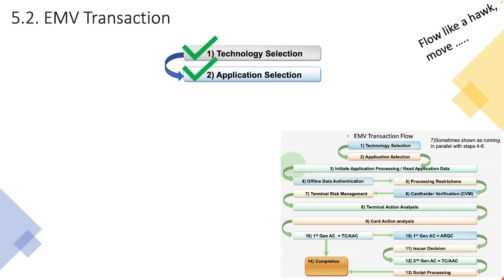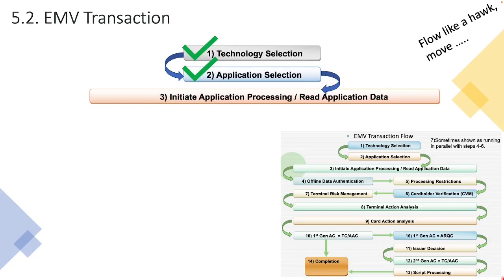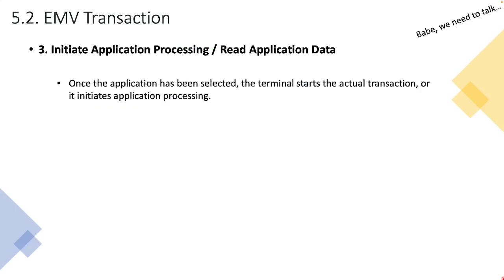This brings us to today's video. Where we are now is that there has been an agreement between the card and the terminal regarding which virtual card on the physical card will be used for this transaction. We are now at a point where this particular virtual card is ready to engage with the POS device, start communicating, and exchanging data that is relevant and critical to the transaction. Once the application has been selected, the terminal starts the actual transaction — it initiates application processing.